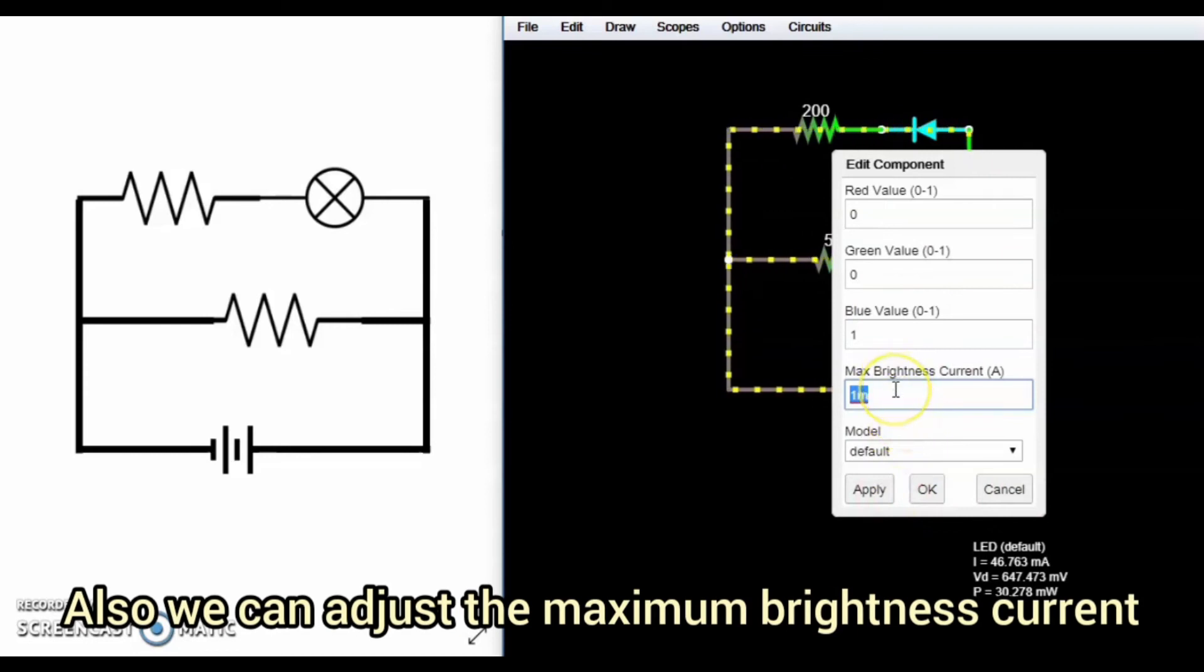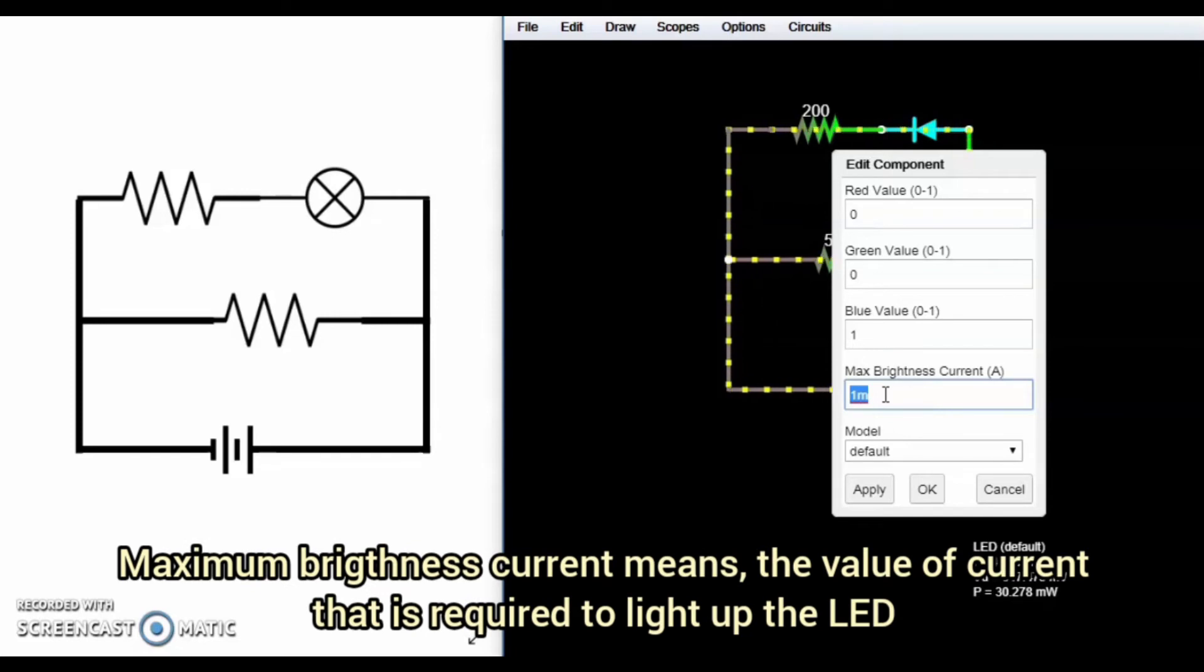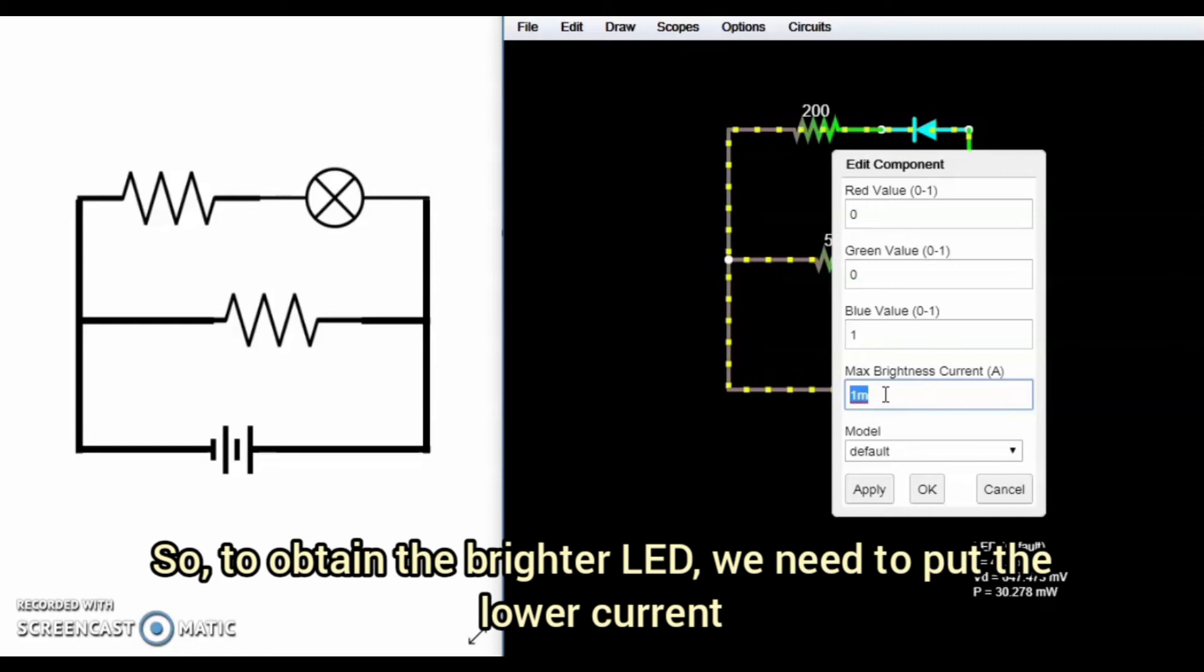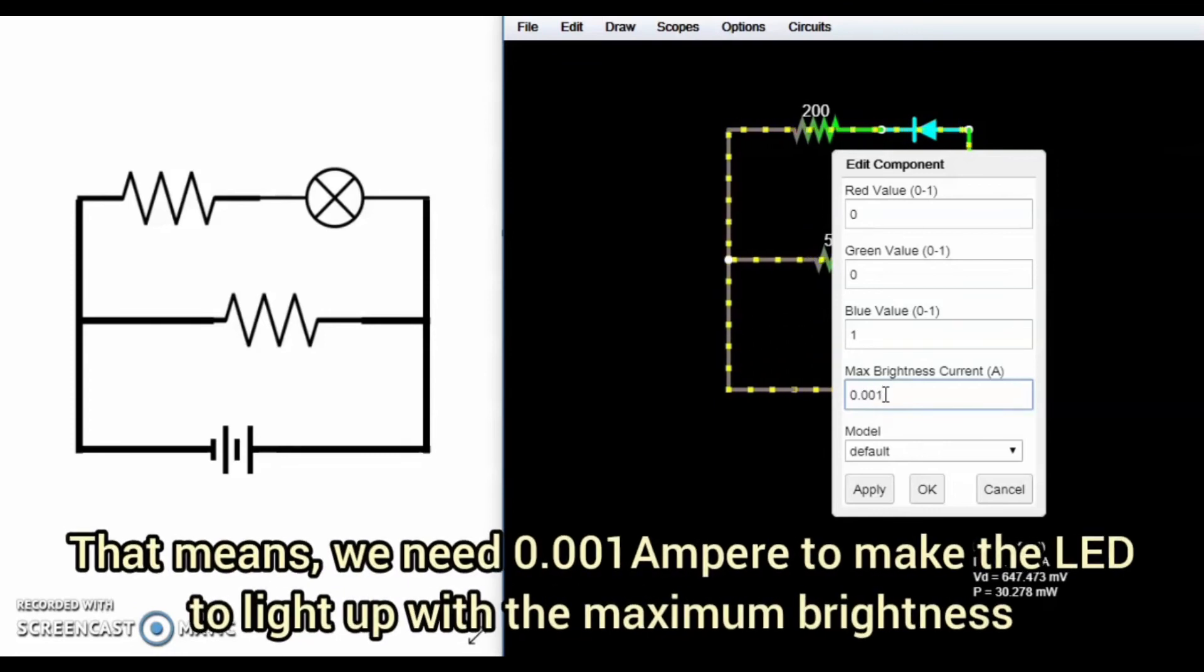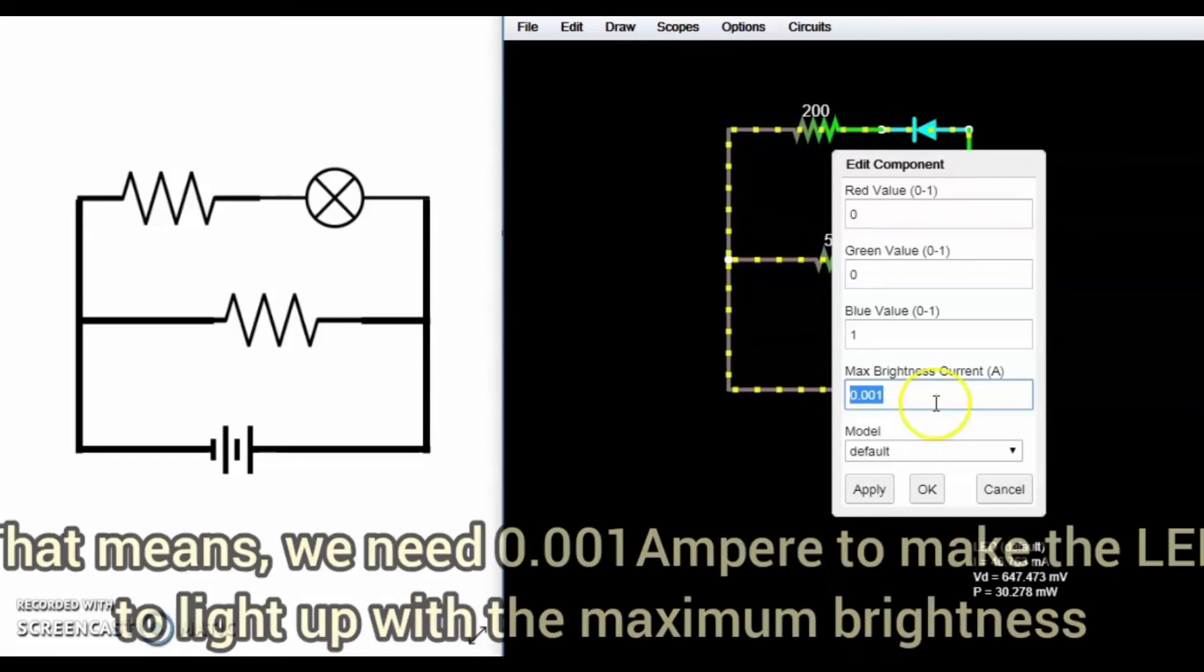Also, we can adjust the maximum brightness current. Maximum brightness current means the value of current that is required to light up the LED with the maximum brightness. So to obtain a brighter LED, we need to put a lower current. That means we need 0.001 ampere to make the LED light up with maximum brightness.